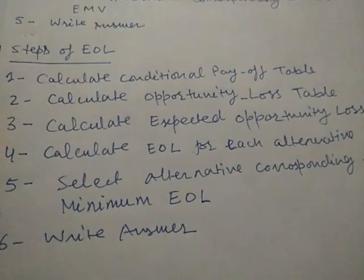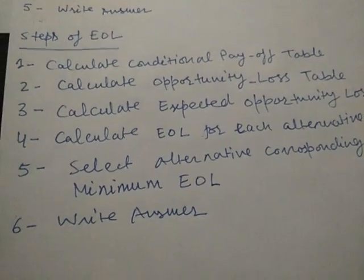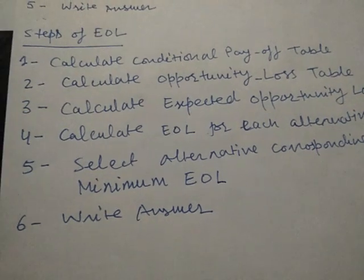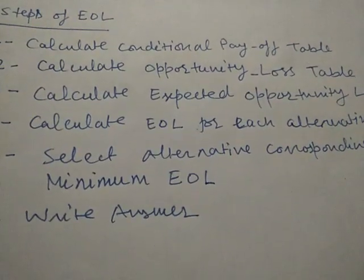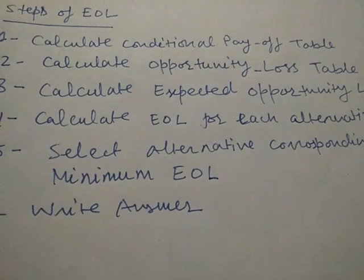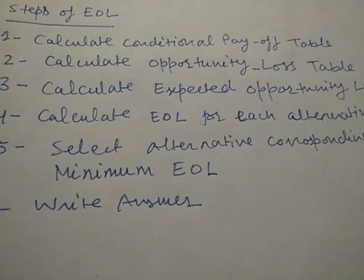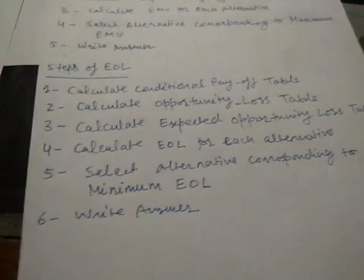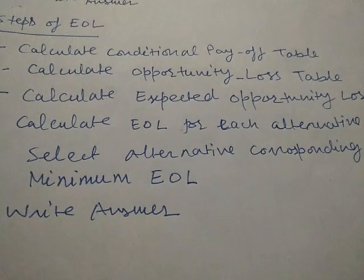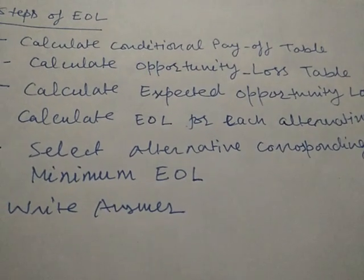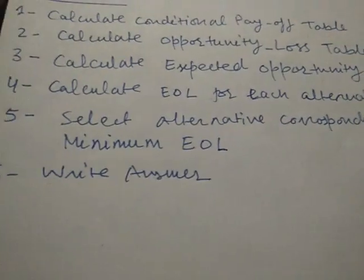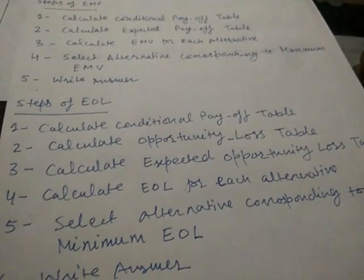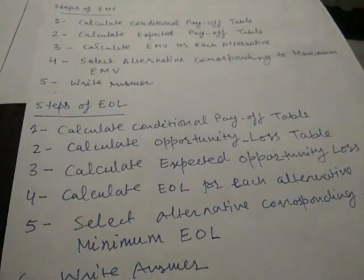Steps for EOL: (1) Calculate conditional payoff table — if not given, calculate from the information provided; (2) Calculate opportunity loss table — identify the maximum payoff along each state of nature and subtract all payoffs from it; (3) Calculate expected opportunity loss table — multiply probability with each opportunity loss; (4) Calculate EOL for each alternative by summing along the course of action; (5) Select the alternative corresponding to minimum EOL; (6) Write the answer. I suggest you practice this question by yourself, and then we will practice more questions. Thank you.